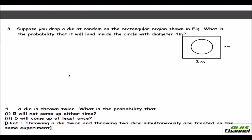The third problem: suppose you drop a die at random on a rectangular region. What is the probability that it will land inside the circle with diameter one meter? The favorable outcome is the area inside the circle and the total outcome is the full area of the rectangle. The area of the rectangle is length times width: 3 times 2 equals 6 square meters.